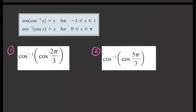Now for cosine and its inverse: if you compose cosine with its inverse, you can cancel them as long as x is within the restricted domain for cosine inverse. Similarly, if you switch the order and do cosine inverse composed with cosine, the result is x as long as x lies within 0 to pi. This is slightly different from sine because cosine is one-to-one on a different interval.